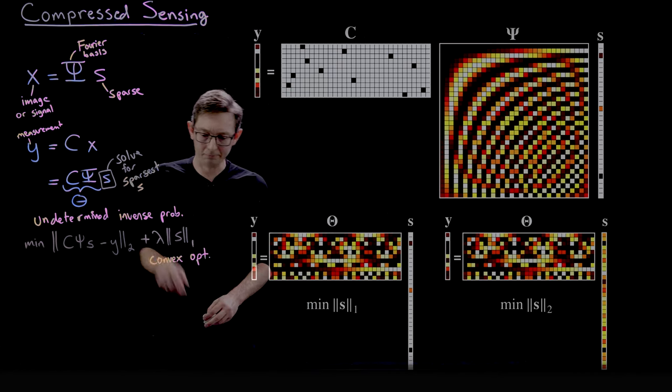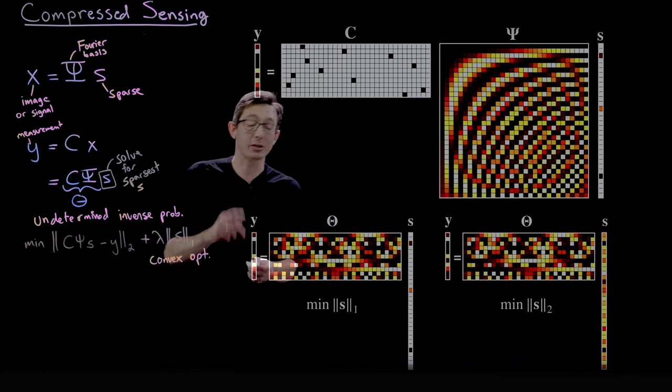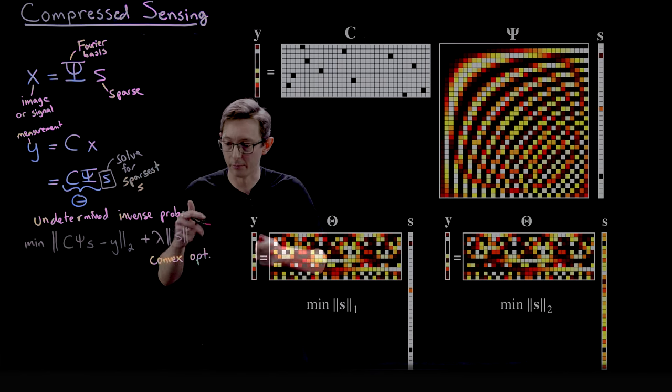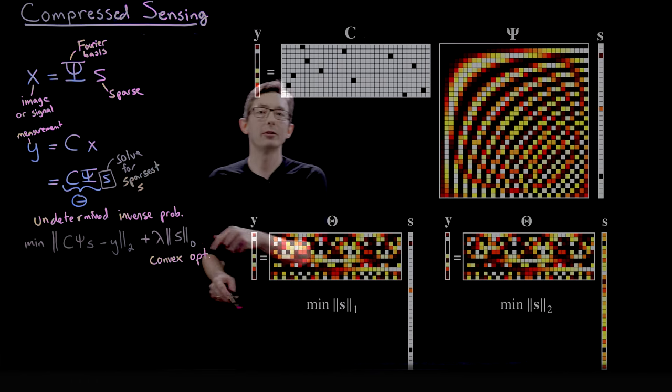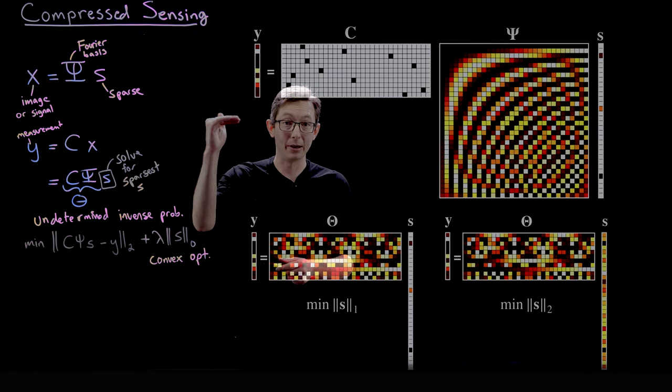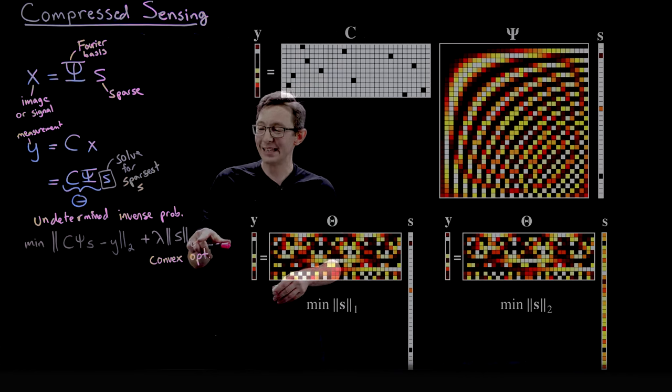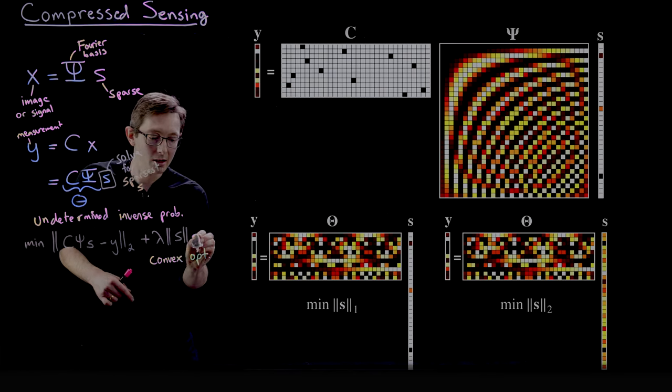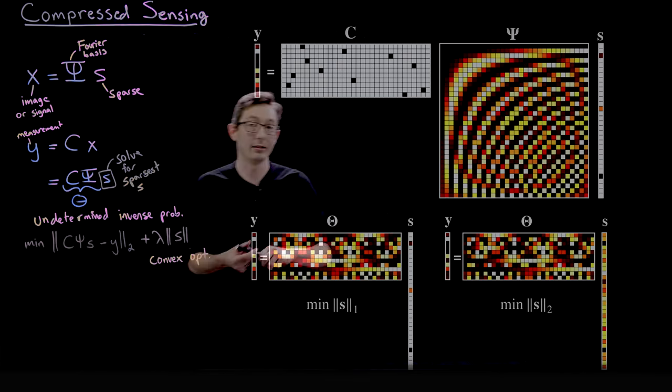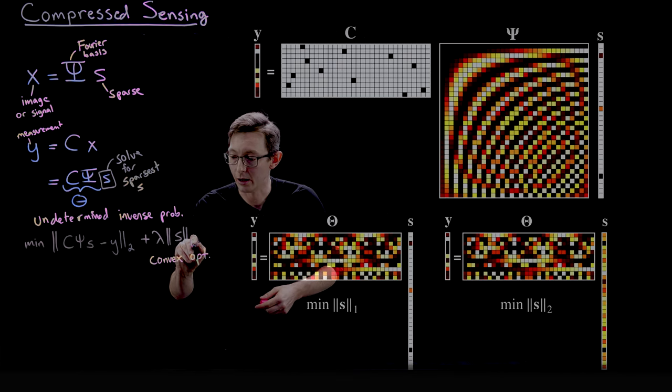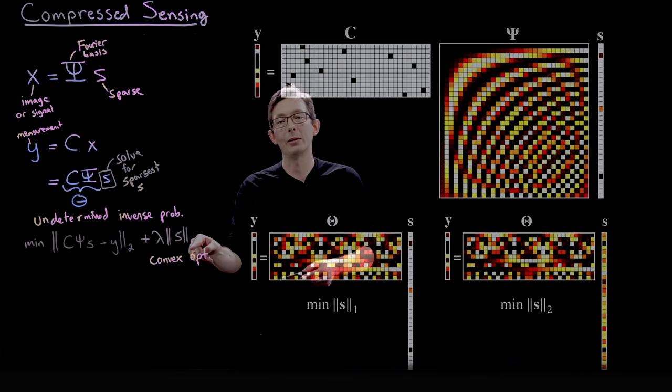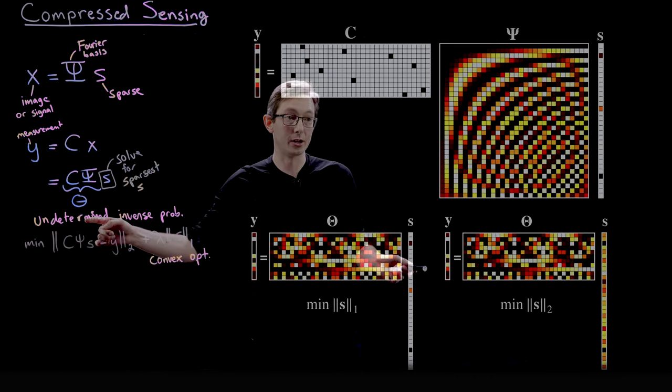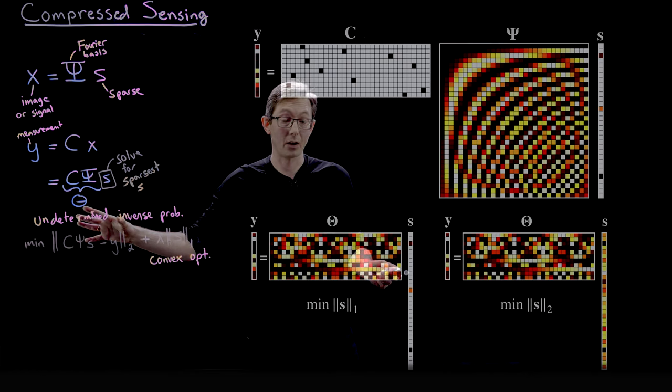But what I want to point out is the problem we actually want to solve is the minimum zero norm. Because the zero norm of S literally counts how many non-zero entries there are in S. But this is not convex. You can't solve this efficiently with computers. And so the big advance in that early 2000s I was talking about is showing that if you replace that with a one norm, with high probability this will converge to the sparse solution that we actually want.